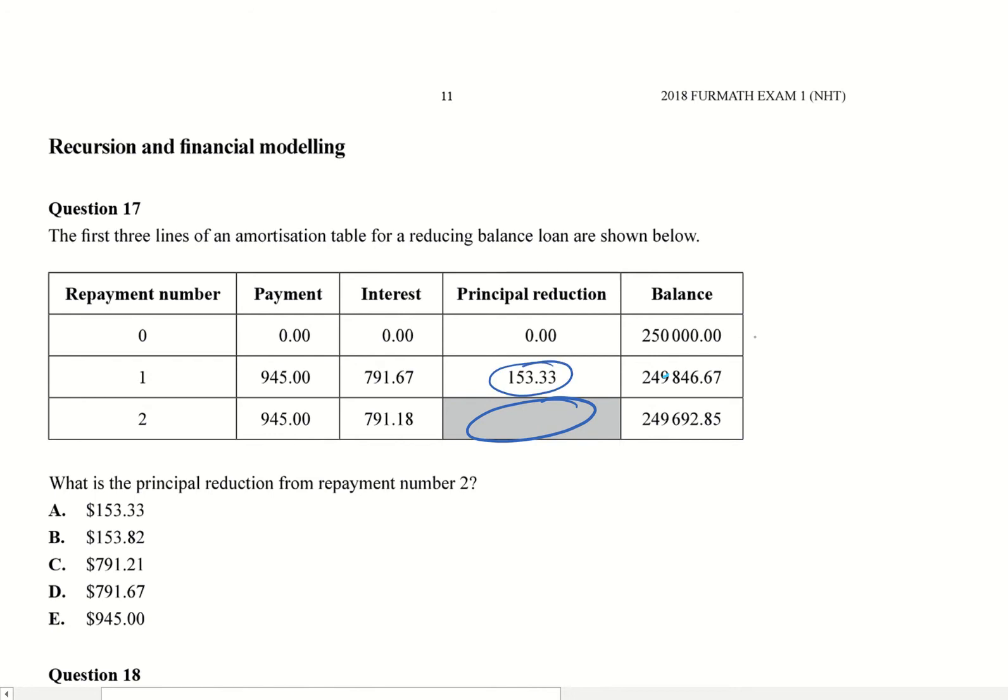What you're after here is this principal reduction. As we can see for this one, it's basically your balance for zero when you start off and balance at one, and that gives your principal reduction for repayment number one. So when we do repayment number two, we're going to go that payment minus that one.